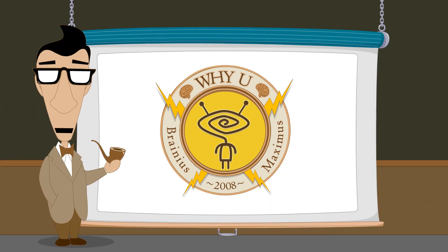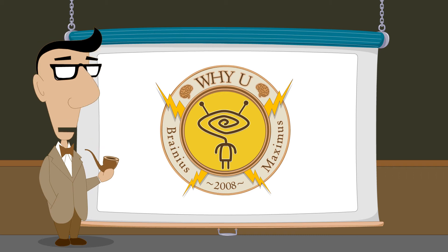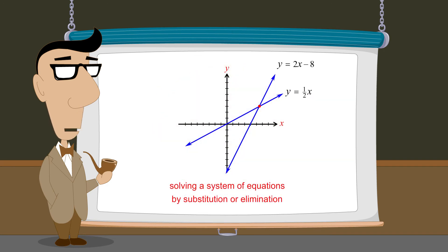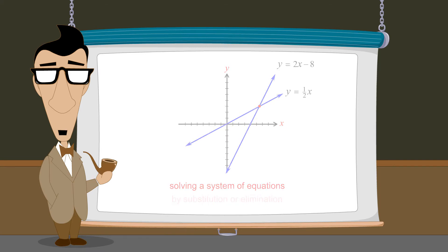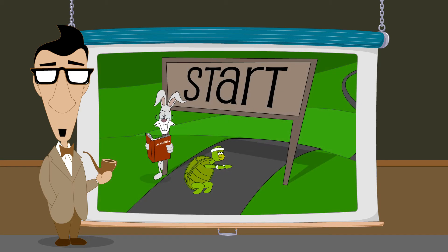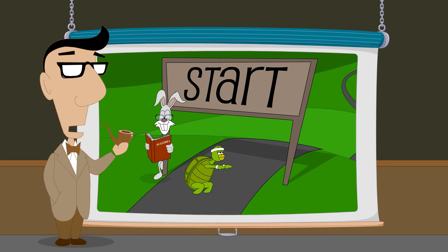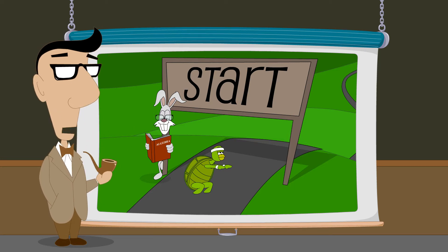Hello, I'm Professor Von Schmohawk and welcome to Why U. So far, we have discussed methods of solving systems of two linear equations in two variables, including the substitution method and the elimination method. We also showed how a system of linear equations could be used to find a time and place where two runners, starting at different times in a race, will meet. But what other types of problems can be solved using systems of linear equations?